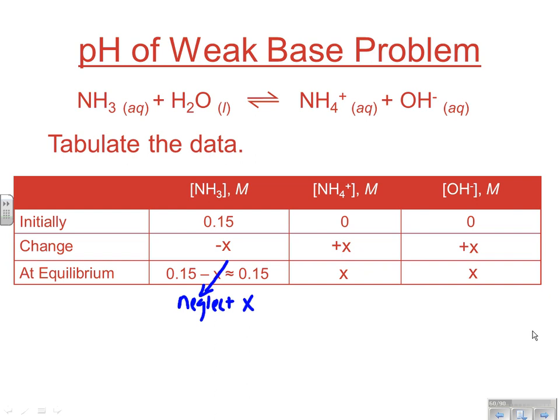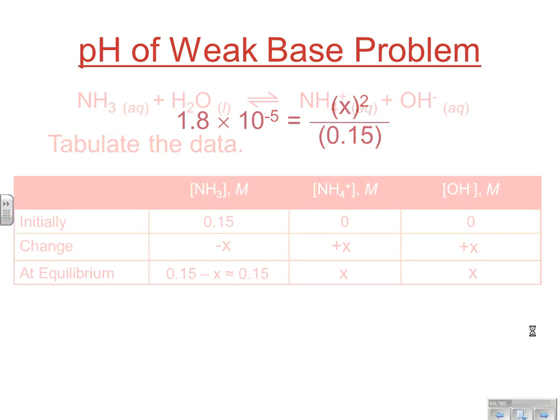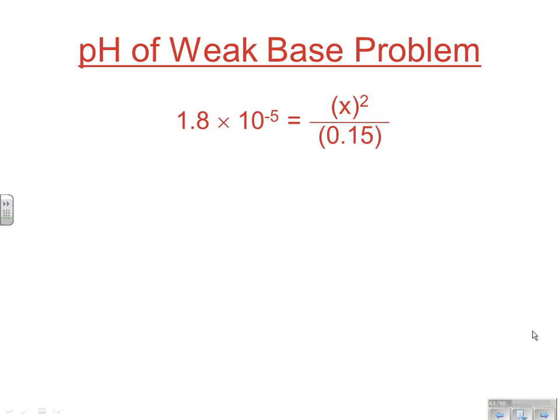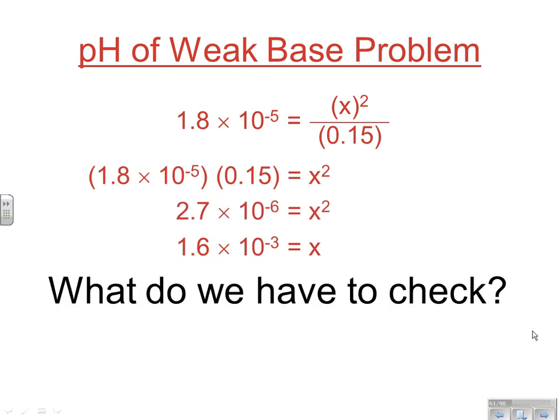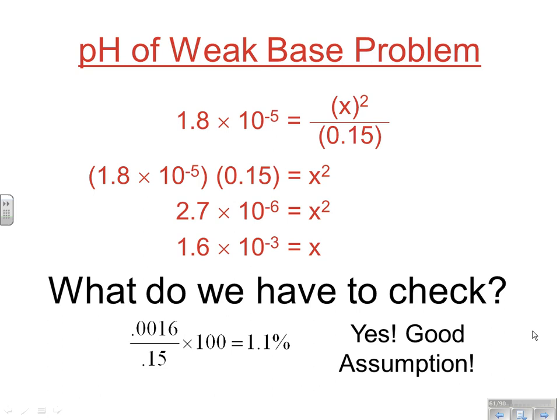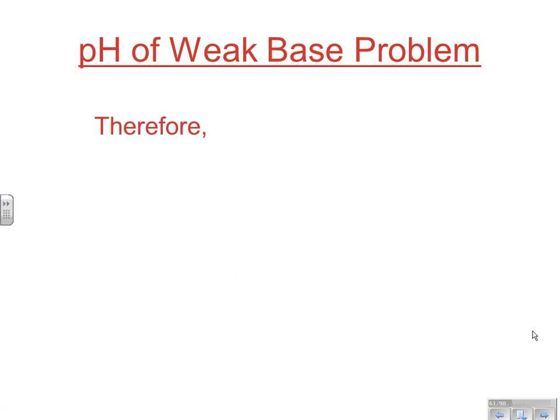So now at this point, we have our equilibrium concentrations, which we can substitute into our KB expression. On top, we're going to have X and X. On the bottom, we're going to have 0.15 because remember, we neglected X, and that's simplified to 0.15. And that way, we avoid the quadratic, and we end up with a simple situation solving for X. We get 1.6 times 10 to the negative third. Now, at this point, what do we have to check before we get into calculating pOH and pH? We have to check the 5% rule. So we compare our value here of our OH- to our original concentration. It's 1.1%. That's less than 5%. So yes, this is a good assumption, and we can totally avoid the quadratic at this point. So it was valid to neglect X in this case.